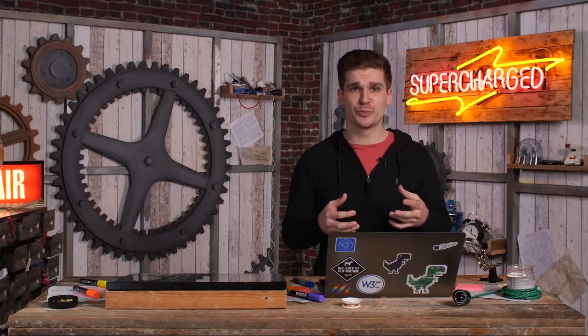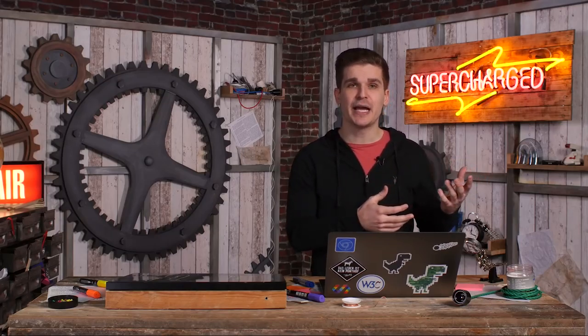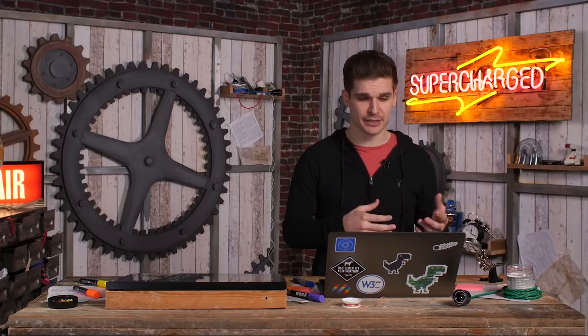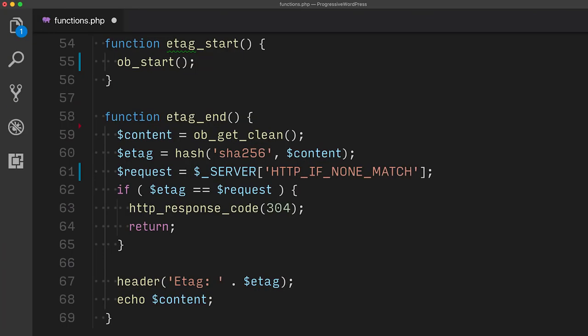So that means instead of sending the output straight to the user, to the browser, I instead get it in a variable first. And then I can use this variable to calculate the SHA-256 hash of the content. And this is the way how I can generate an e-tag for the content that I have generated.